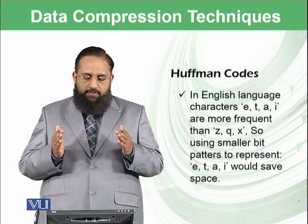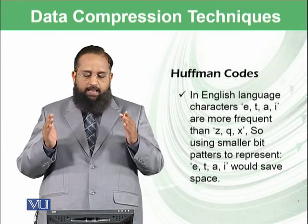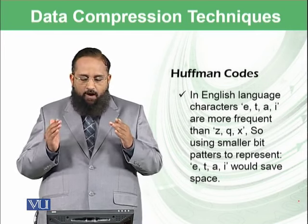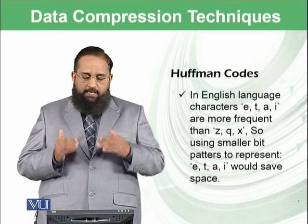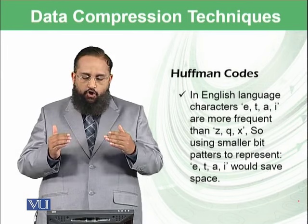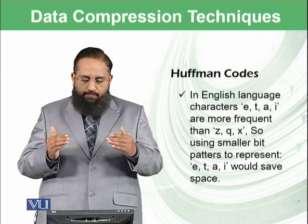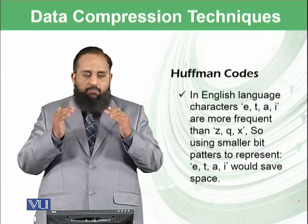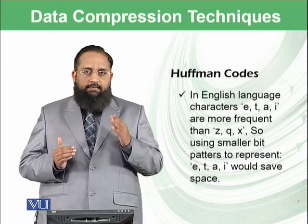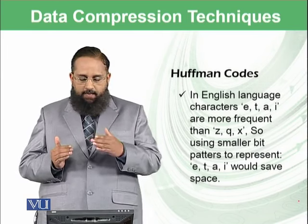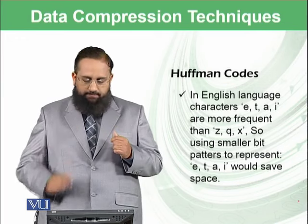In the English language, characters E, T, A, and I are most frequent, whereas Z, Q, and X are less frequent. So using smaller bit patterns to represent E, T, A, and I would save space.